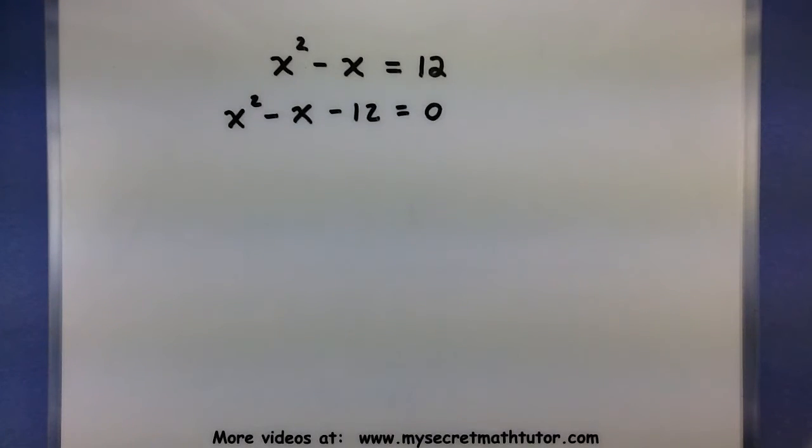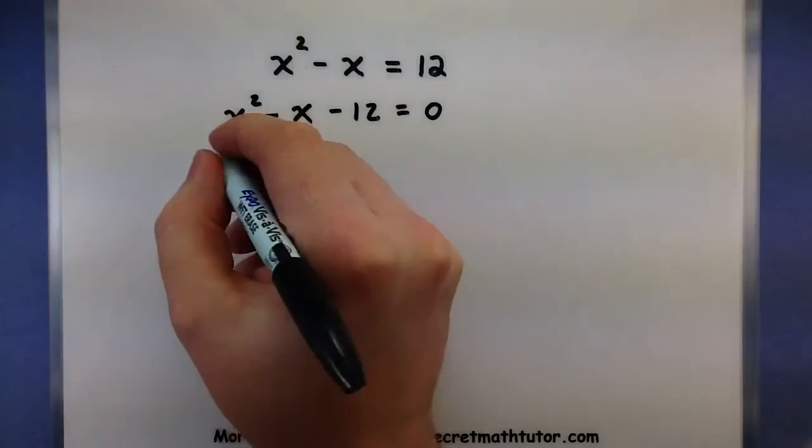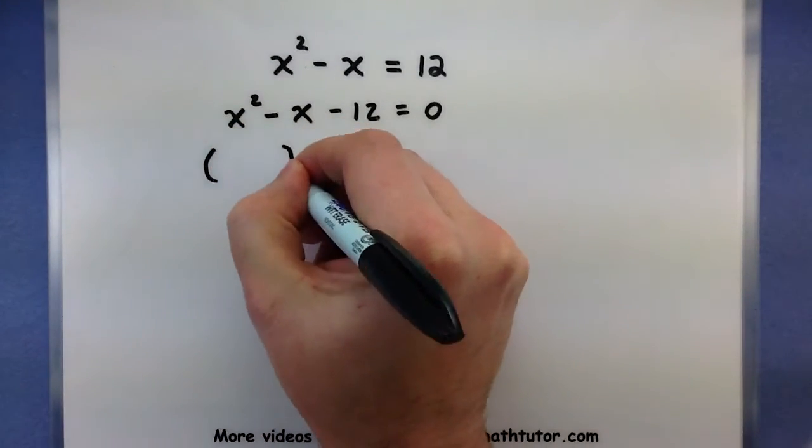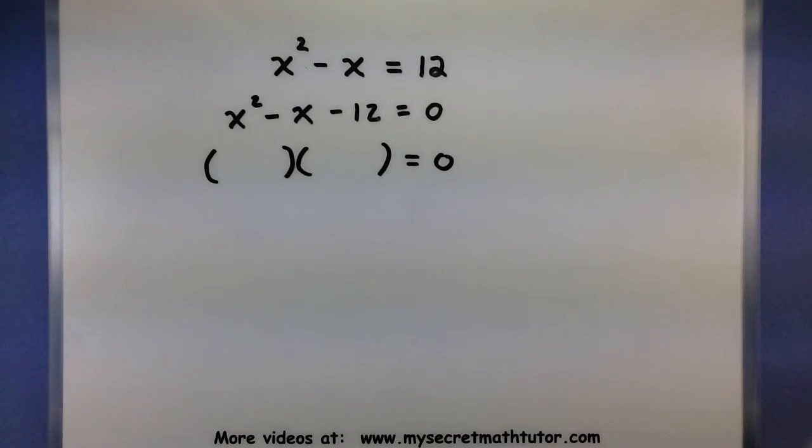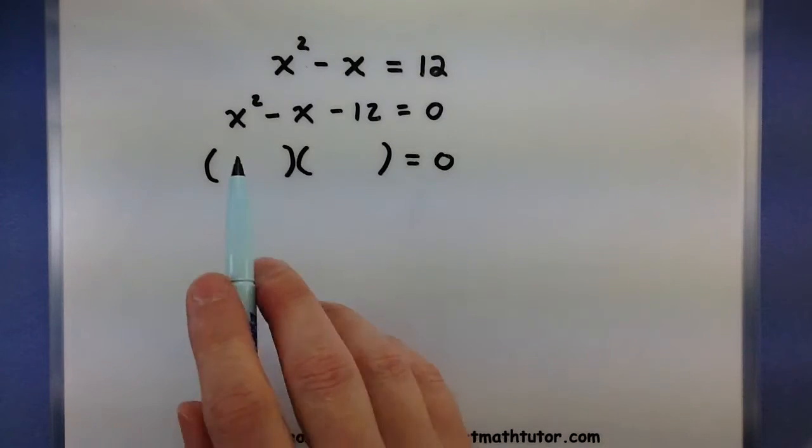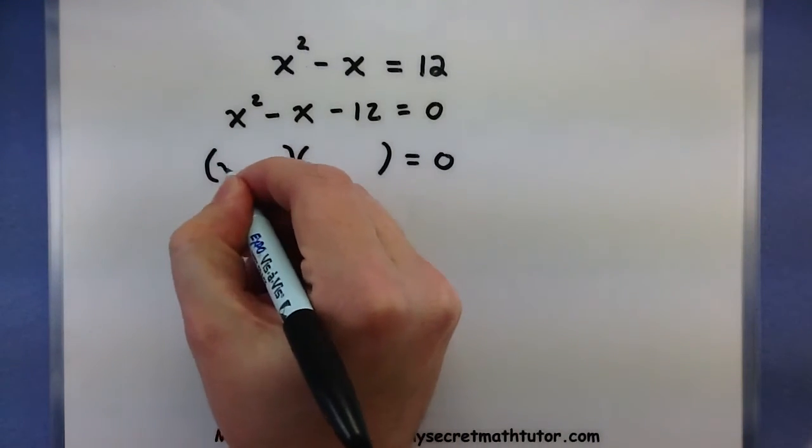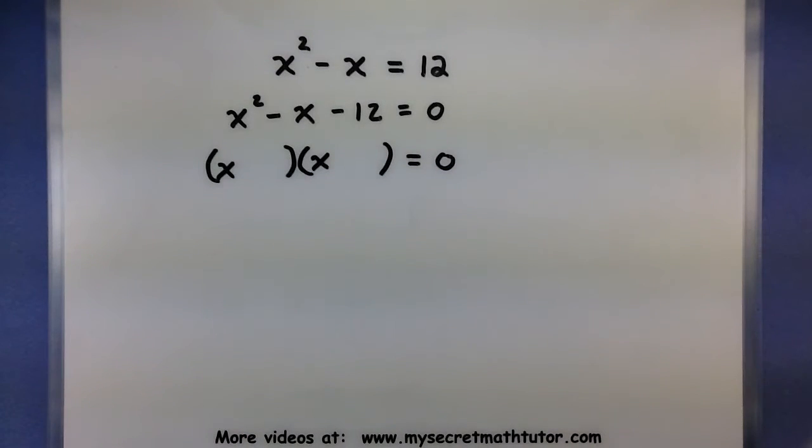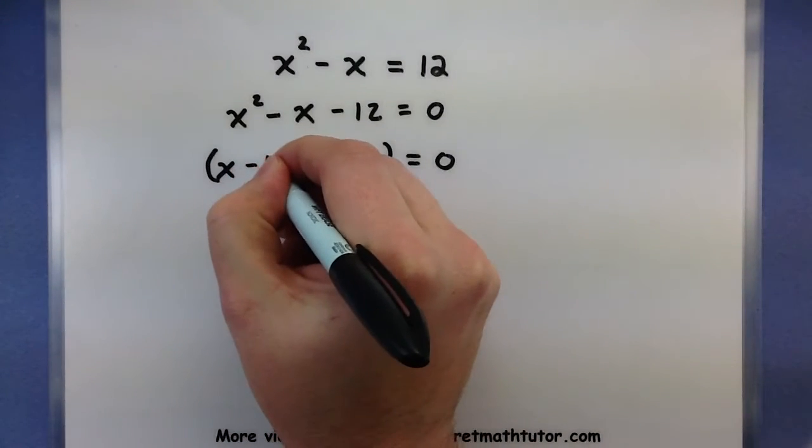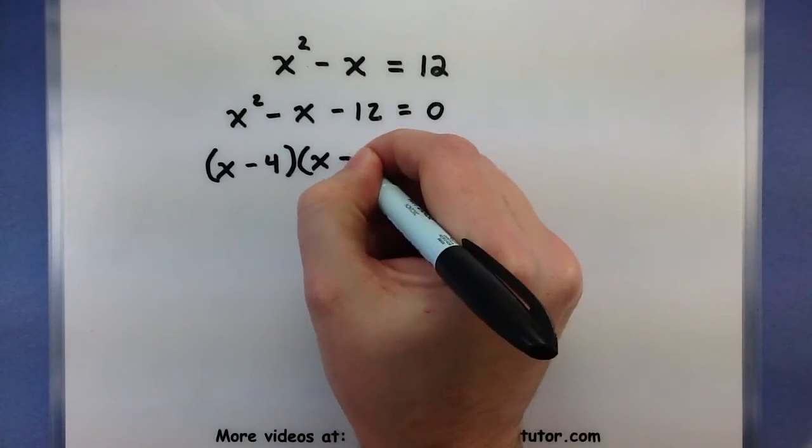Now I want to take this and factor the quadratic over here on the left side. So we're looking for two factors. And you can use any technique to factor this that you want. For this nice example here, I'm going to use just the reverse FOIL method. So I need two values that would multiply together and give me an x squared. So x and x. And I need two numbers that will multiply to give me a negative 12 but somehow add to give me a negative 1. So this will be a negative 4 and a positive 3.